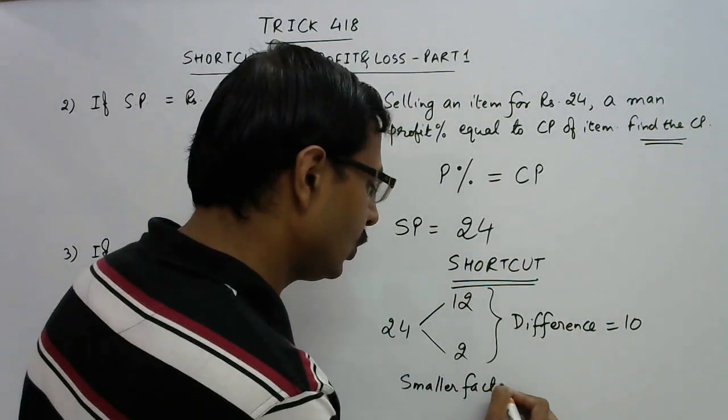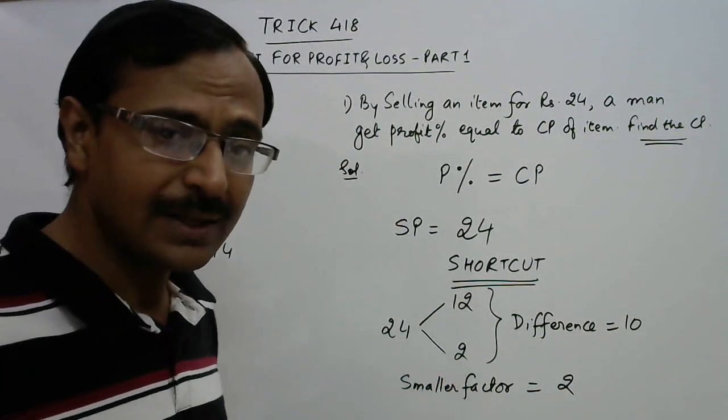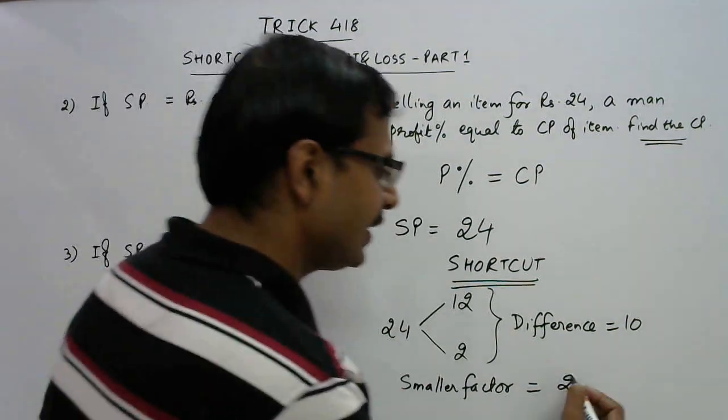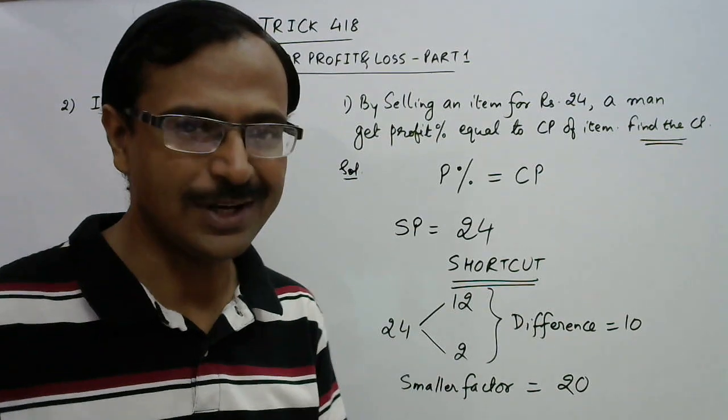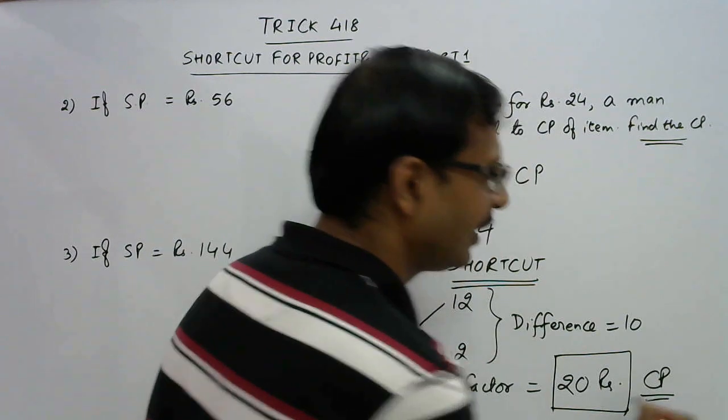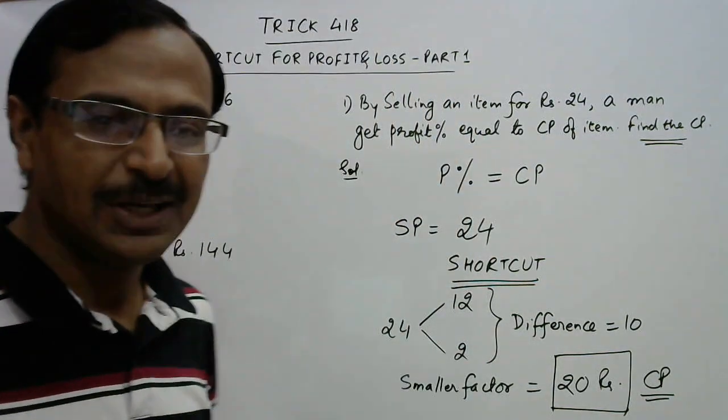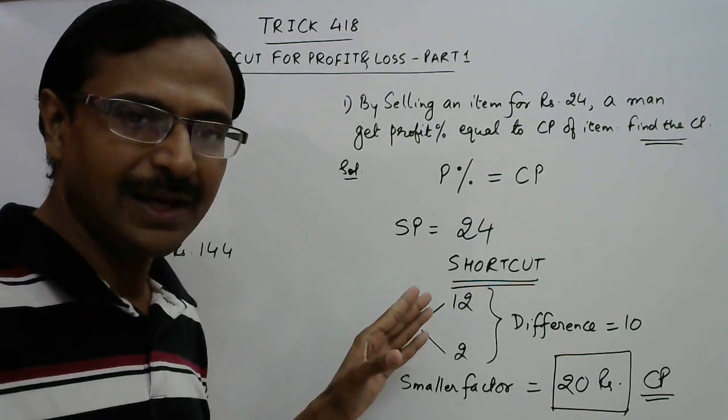Just put a 0 in front of this and here you get your answer, this is the cost price of the item.